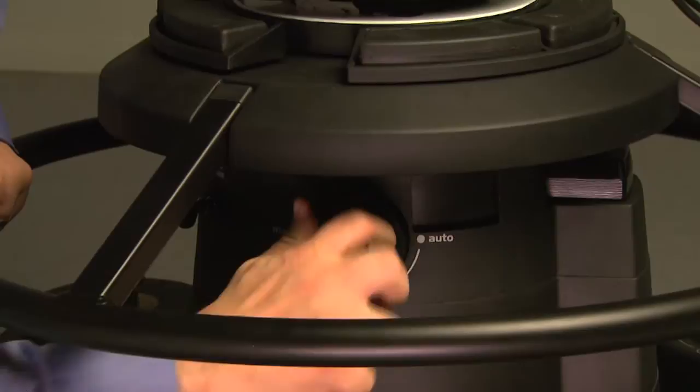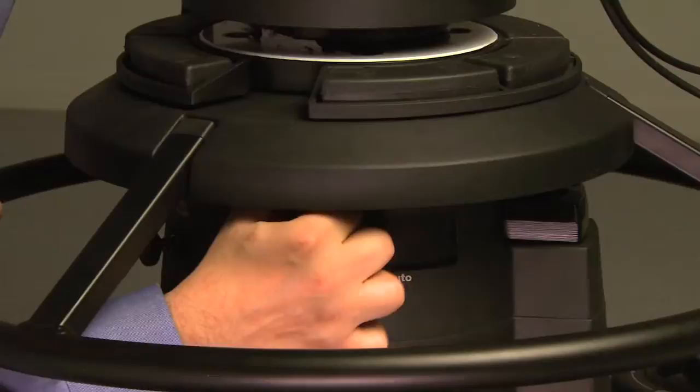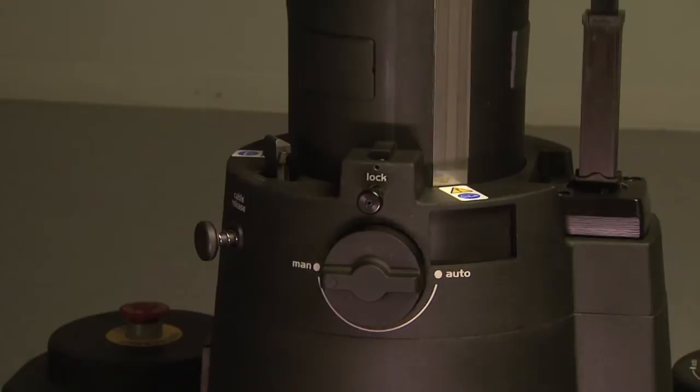Unlock the column whilst continuing to hold it down. Depress the cable release button to disengage the robotic height drive and then release the column slowly.